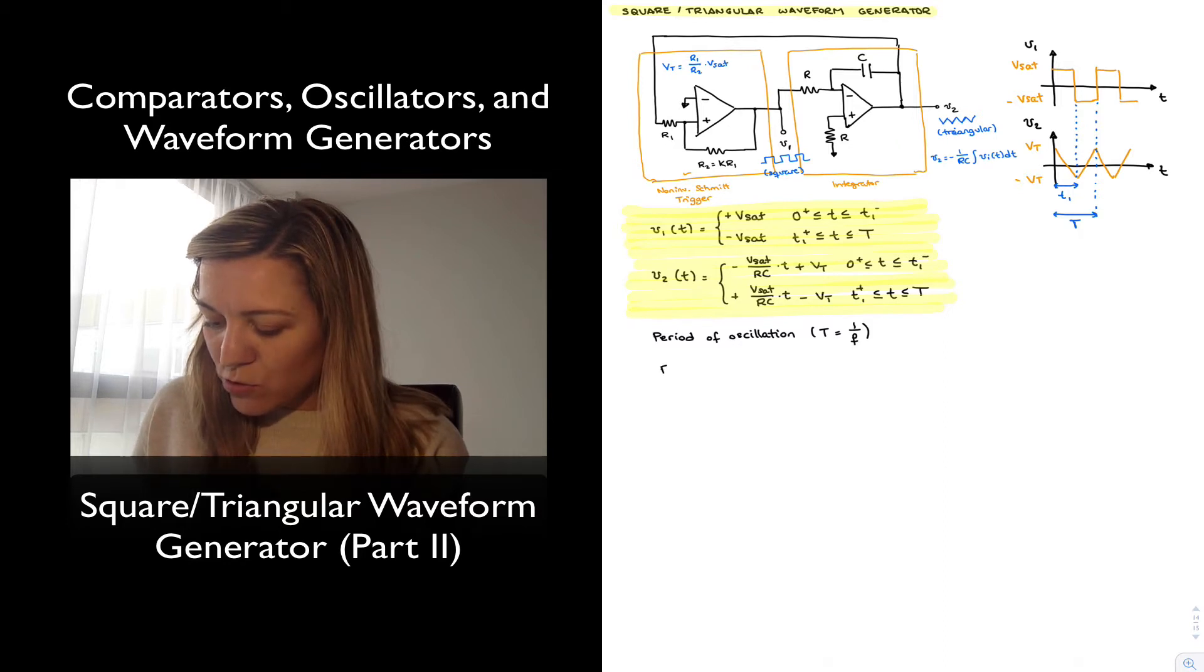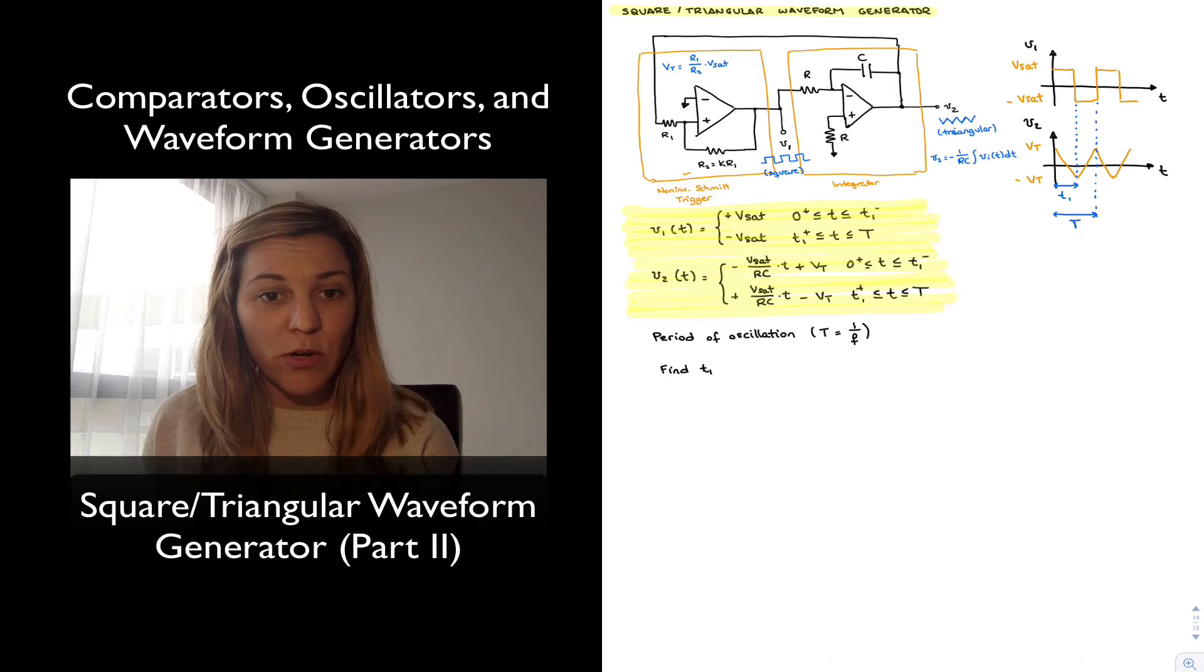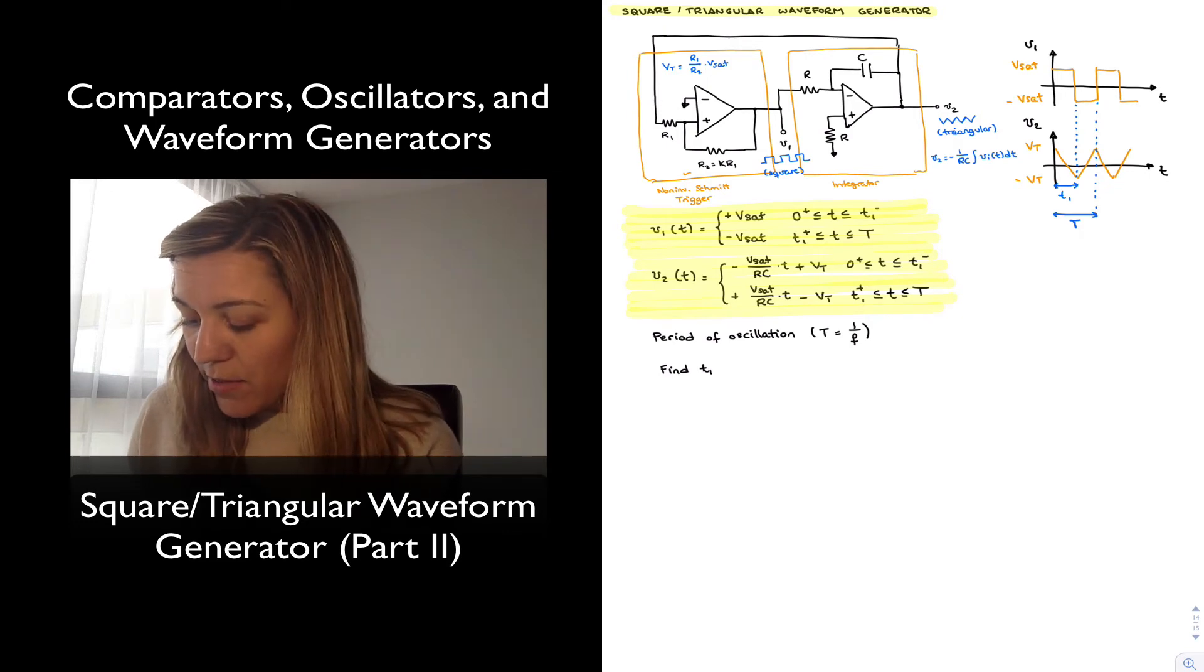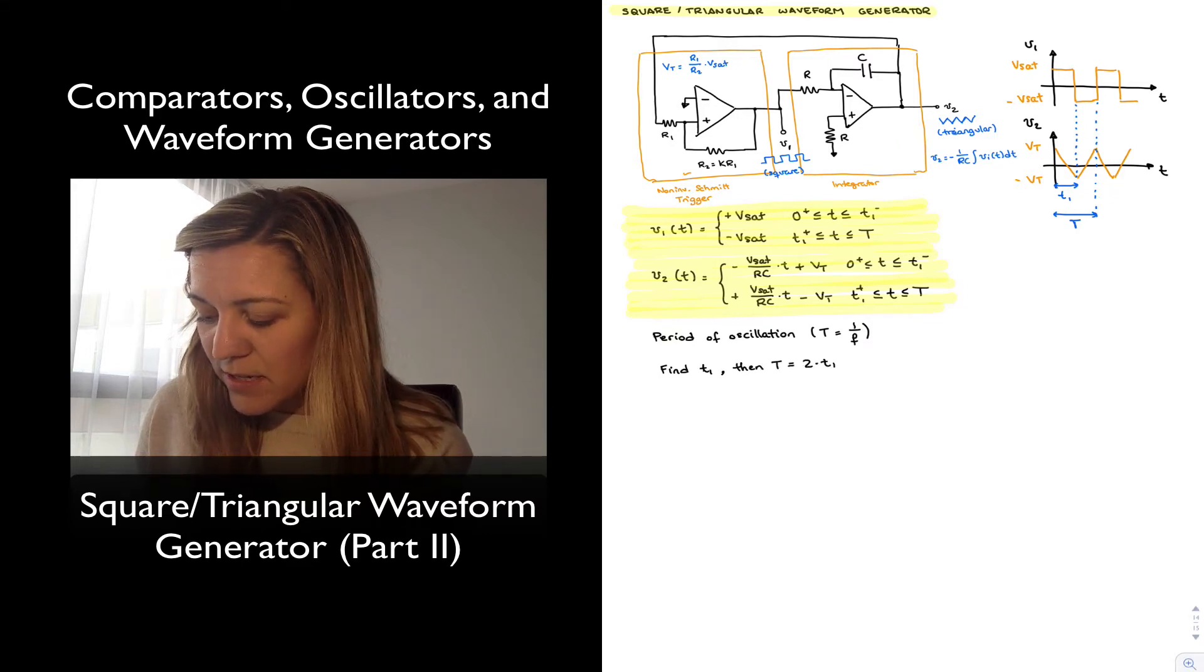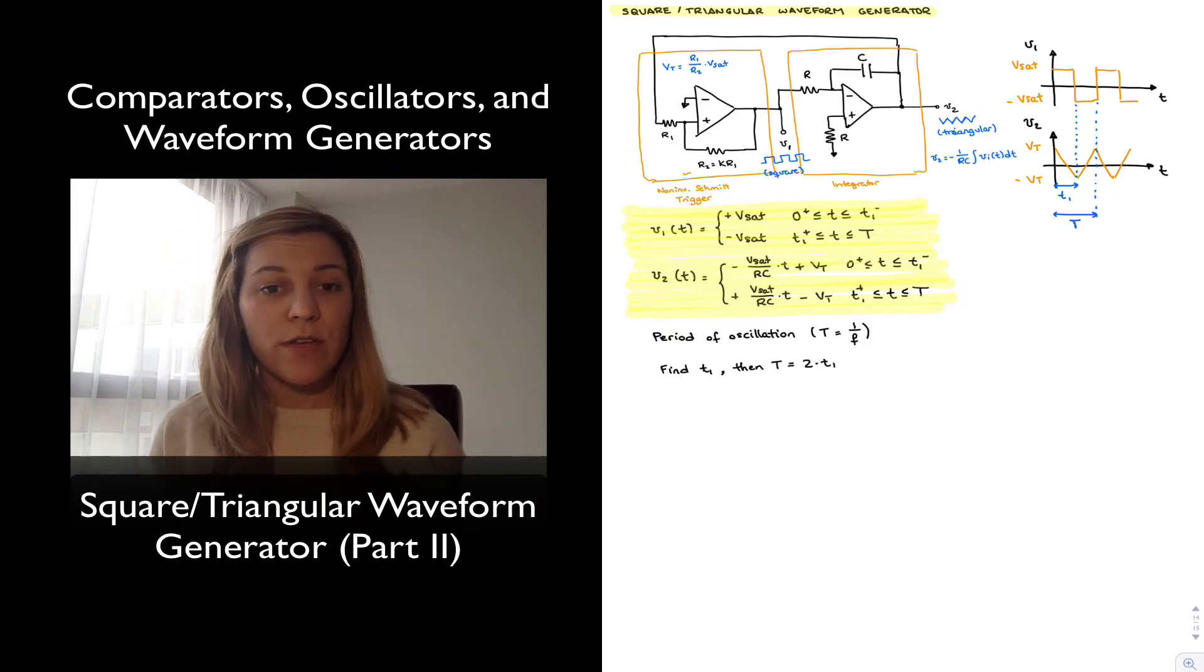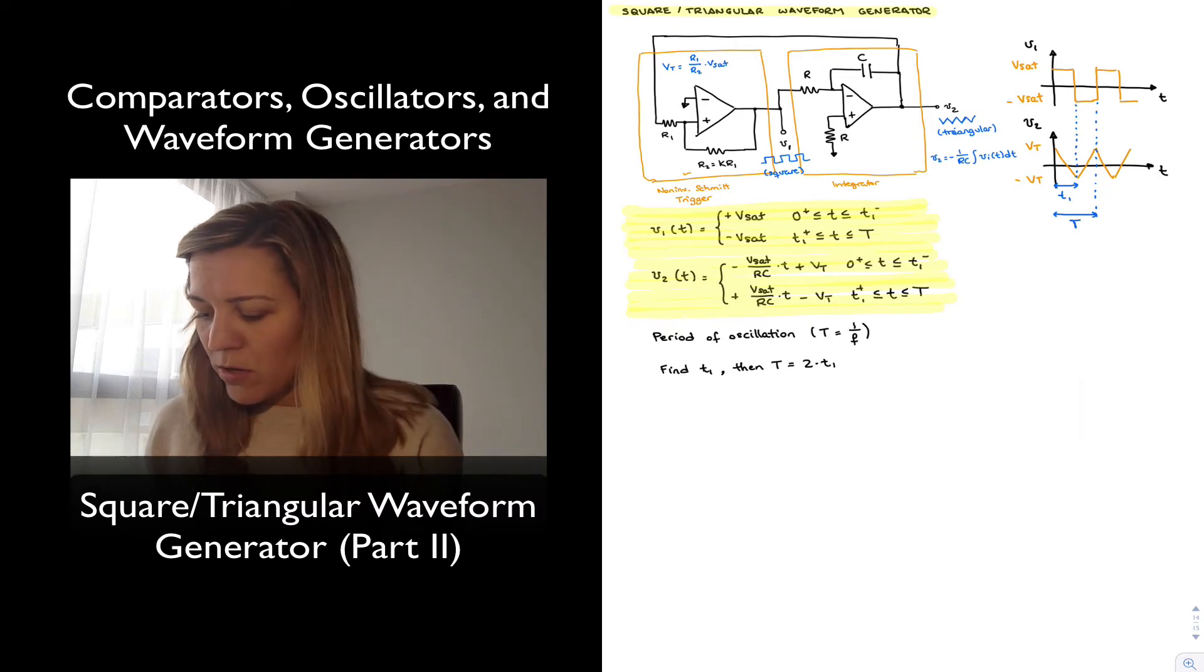So first thing that we're going to do is find the value of T1, which we can do using the equations we have come up with. And then we know that the period is just going to be equal to 2 times T1, because we're going to have a symmetrical positive and negative slopes duration.